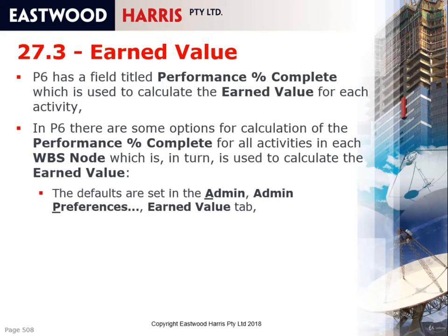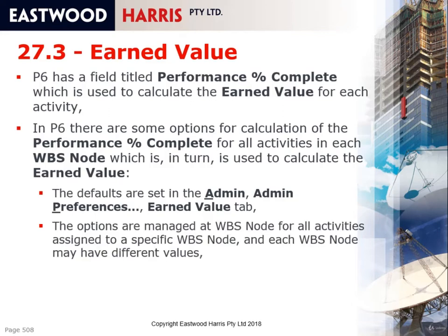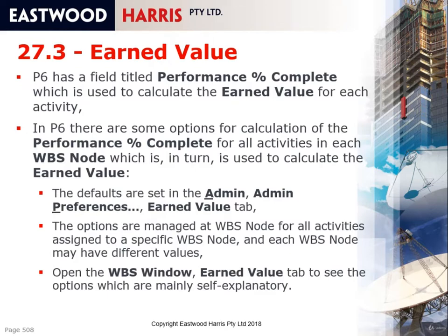The defaults for the Performance Percent Complete calculation for each WBS node are set in Admin Preferences, and the options are managed at the WBS node level. Each time you create a WBS node, it copies the defaults set in Admin Preferences, and then you can change them for each WBS node. Once you open the WBS window you can see the options, which are self-explanatory, and we're going to have a look at those now.